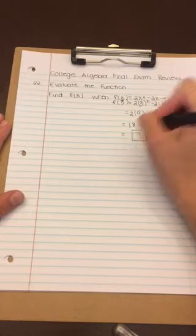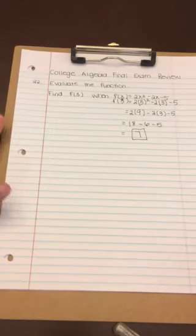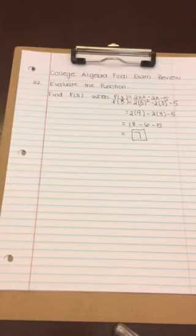So when x is 3, the function equals 7. This is number 22 from the College Algebra Final Exam Review.